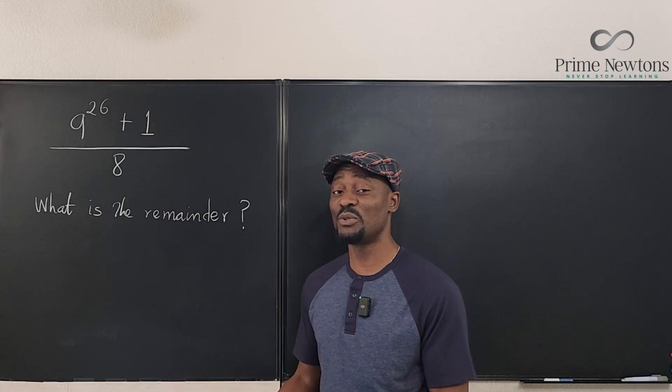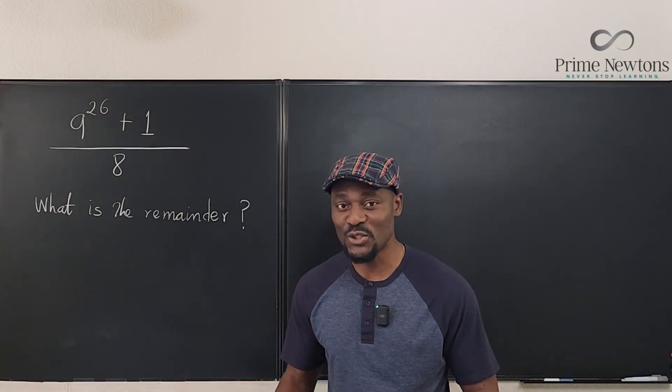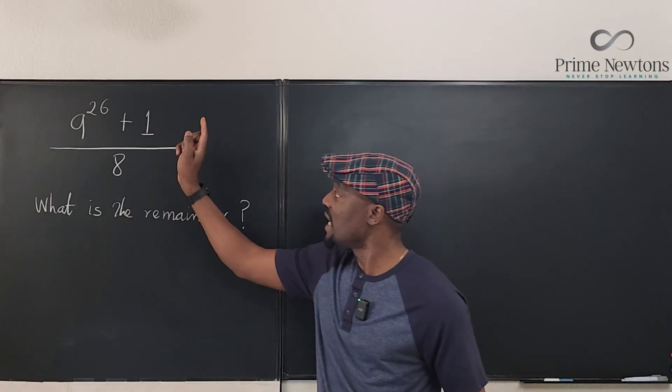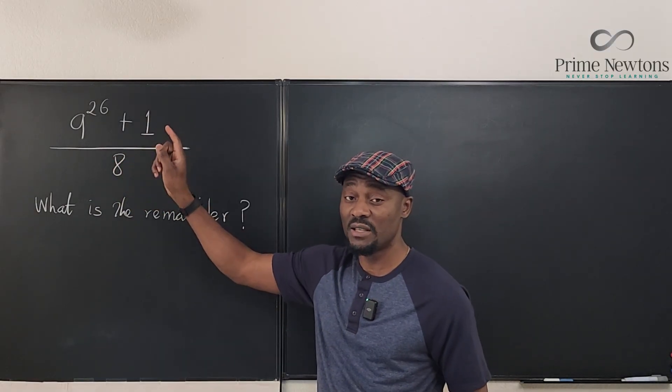If you know what the remainder is at any point, you can always tell what the remainder would be no matter what you do to it. So the mission is to find what the remainder is going to be when you divide 9 raised to power 26 plus 1 by 8.